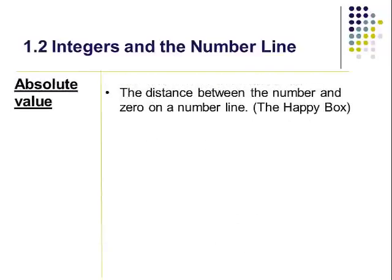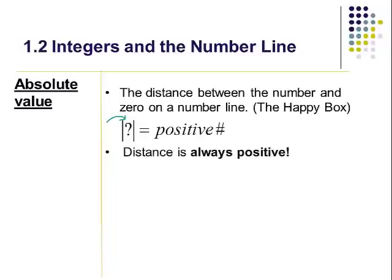One of the other things we deal with in integers is absolute value. What that is is just the distance the number is from zero on the number line. I like to call it the happy box — we have these two little lines, and that's your box. You throw a number in there, and whatever number goes in the box it's always going to come out a positive number. And positive being happy.